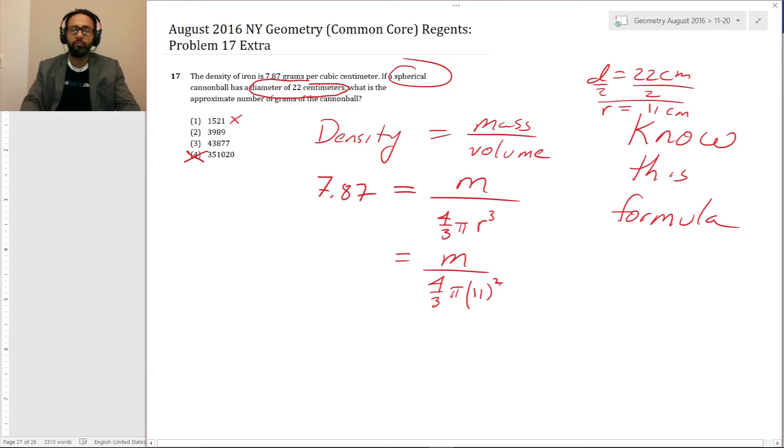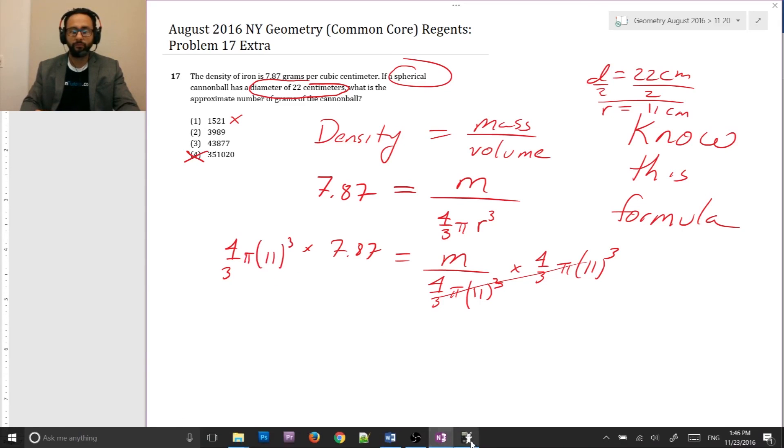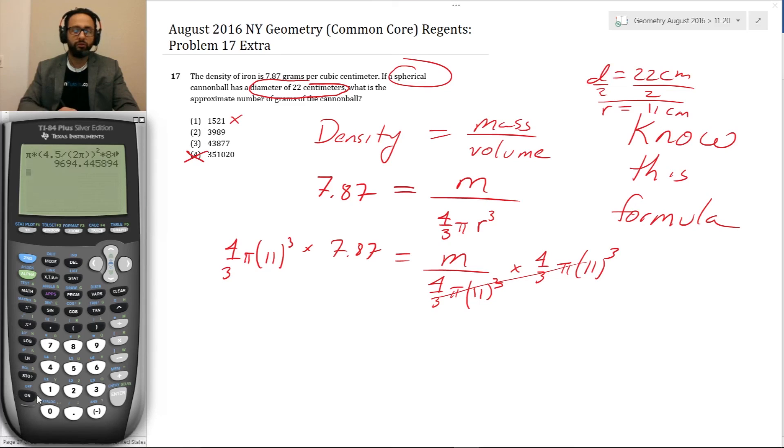So we multiply by four thirds pi 11 cubed to cancel all of this out. And here we also multiply by four thirds pi times 11 cubed. Let's see. That's where we get our calculator out. So we do four thirds times pi times 11 cubed.